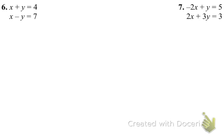Moving on to questions 6 and 7, I set these up to be easier with the elimination method. The variables are already lined up — that's step one. Step two: check for opposite or same coefficients. In question 6, you could cancel out either the x's by subtracting (x minus x = 0) or the y's by adding (positive y plus negative y = 0). You get to choose. I'll use subtraction since students often struggle with it.